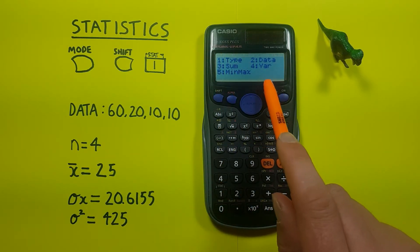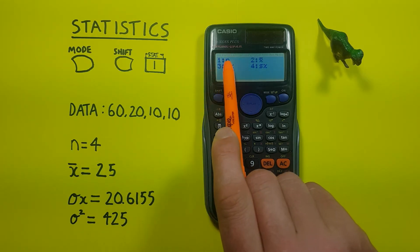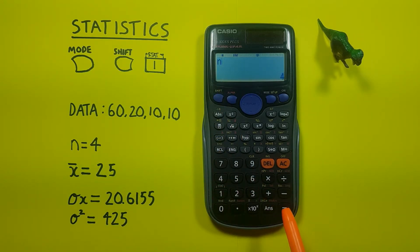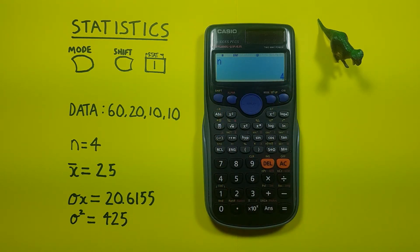Well, let's start out with finding our n, or number of variables. So to do that, we go to 4 and we see 1 is n, so we press 1 and equals. And we see we get an n value of 4. That lets us know we have 4 pieces of data in our dataset.